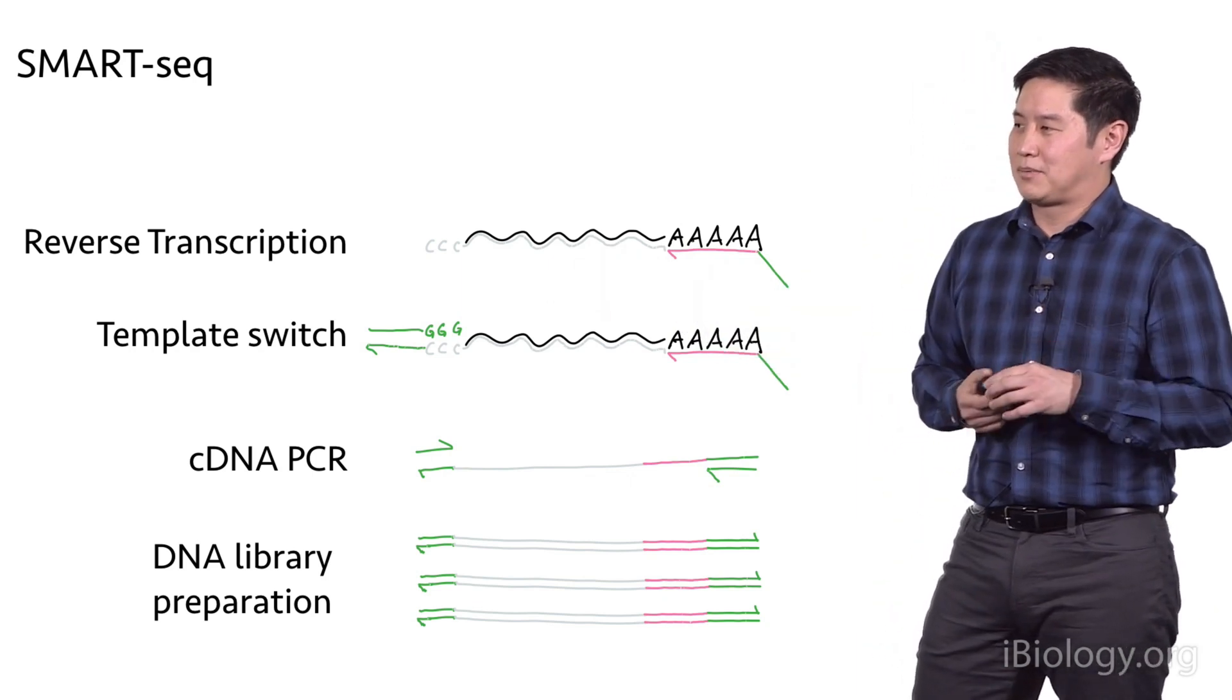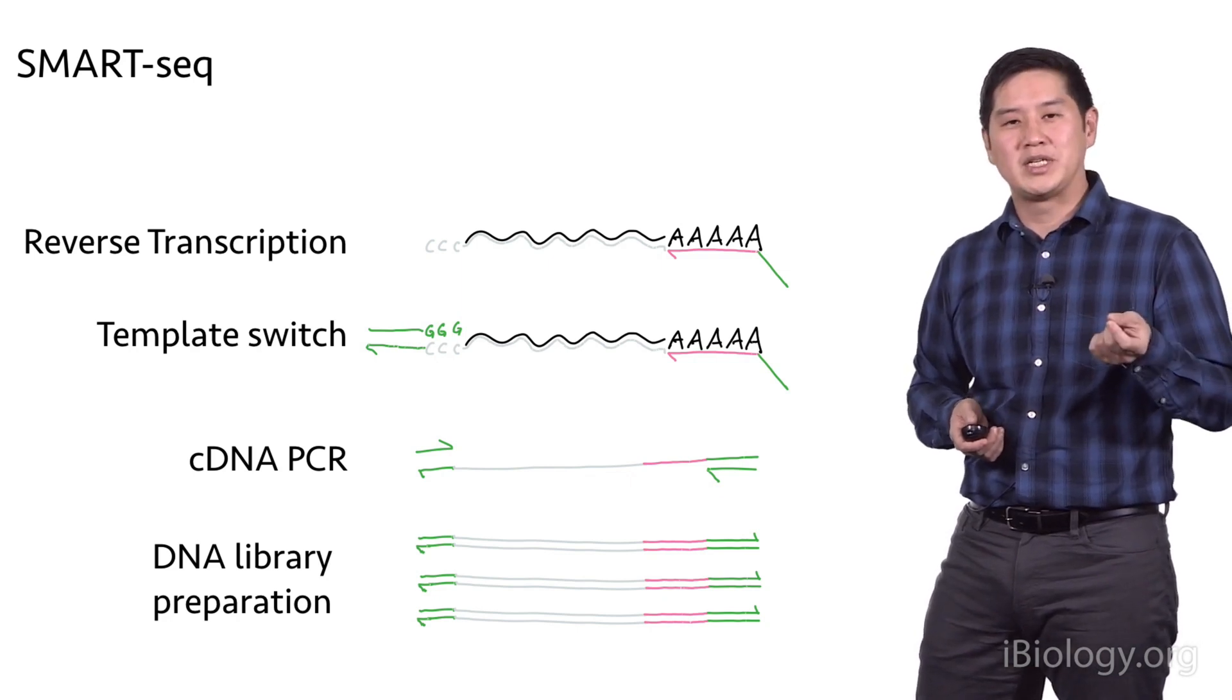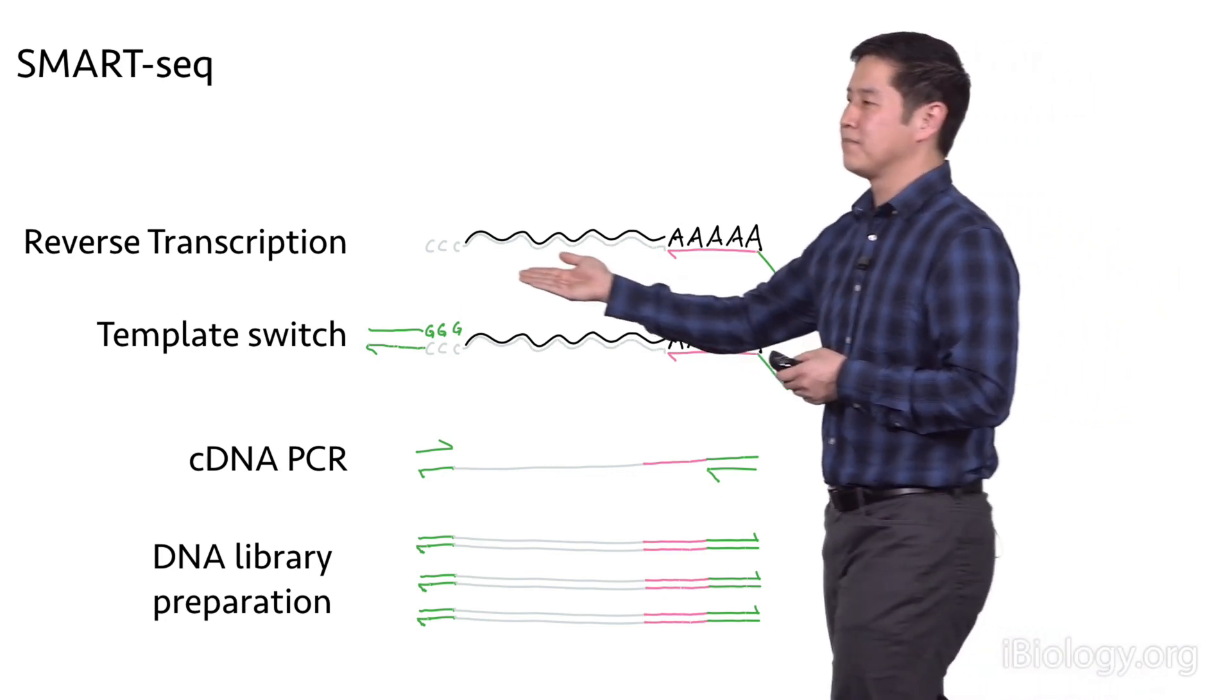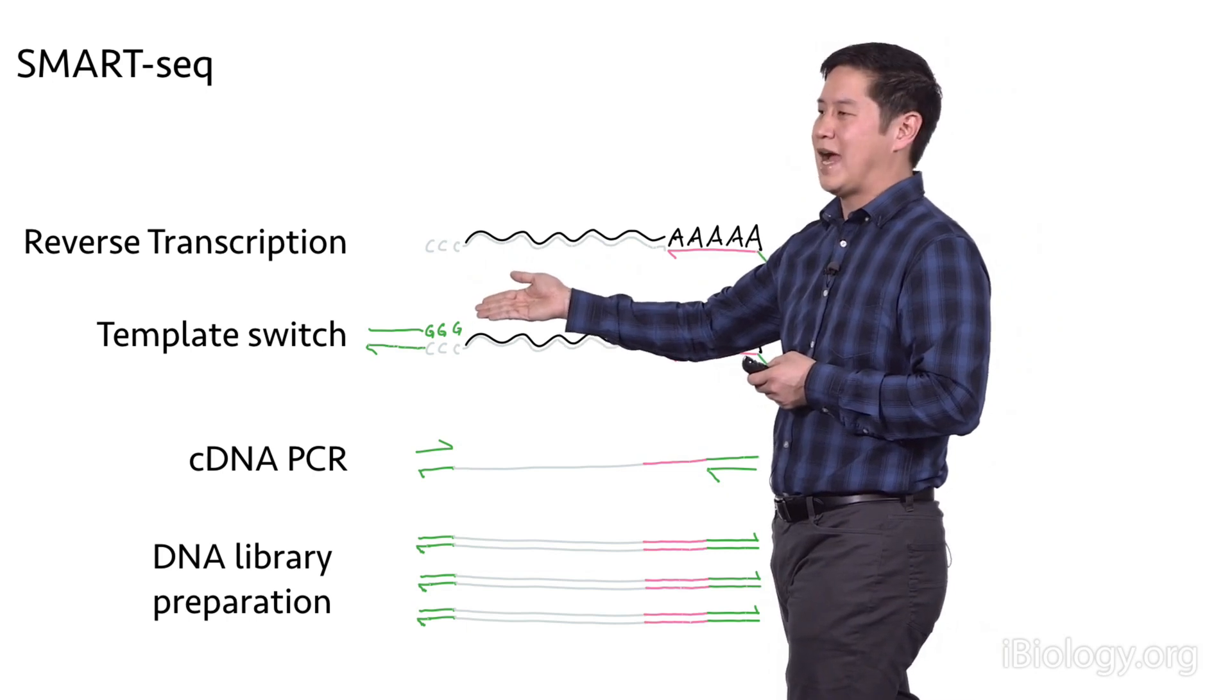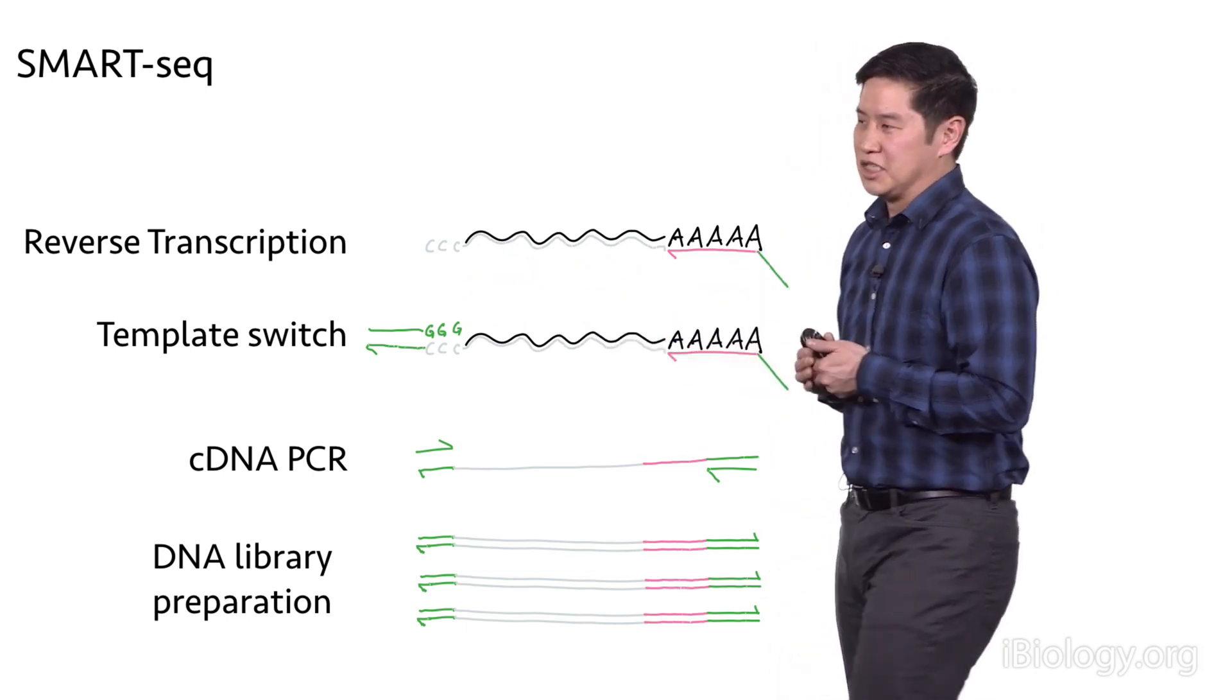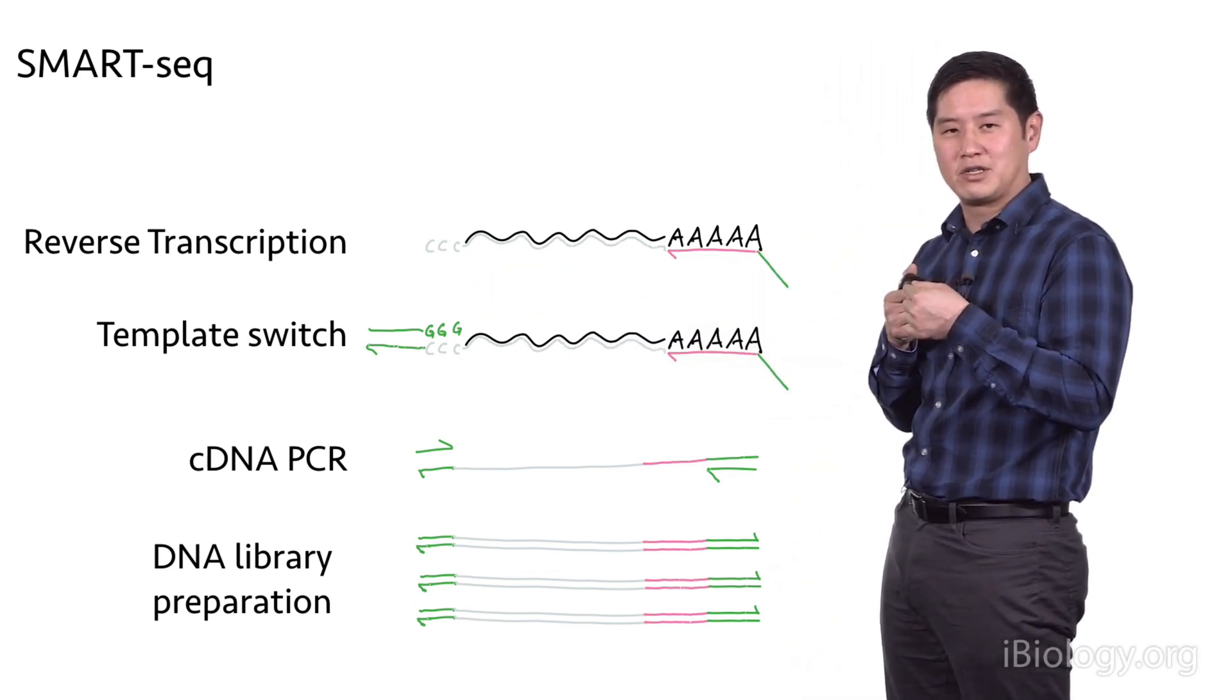One special thing about this process is that it uses a reverse transcriptase with template switching activity. It'll add a couple of non-templated C bases at the end of the cDNA, and this will allow a template switch oligo that's also present in the reaction that contains a couple of G bases. These G bases can hybridize onto those C bases added by the reverse transcriptase,